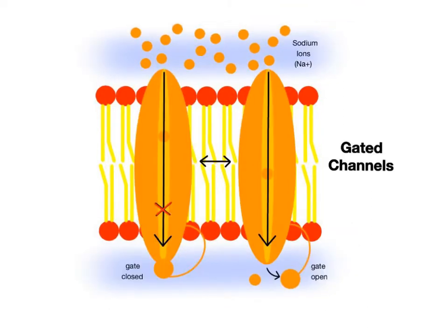Ion channel proteins can also be regulated through the opening and closing of a part of the protein called a gate. Channel proteins with gates are called gated channels. Here we see the gate in an open position.